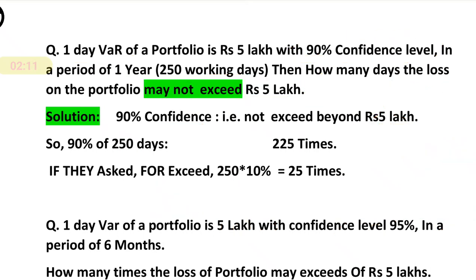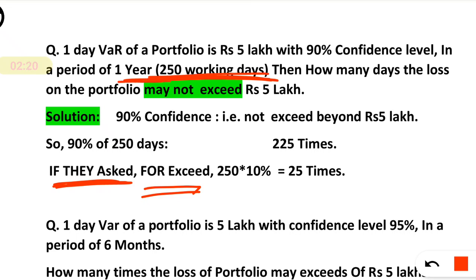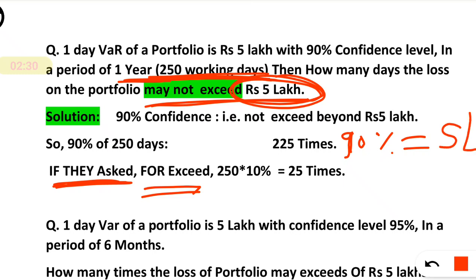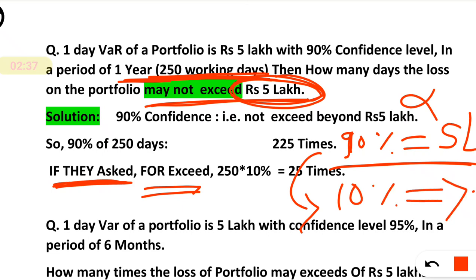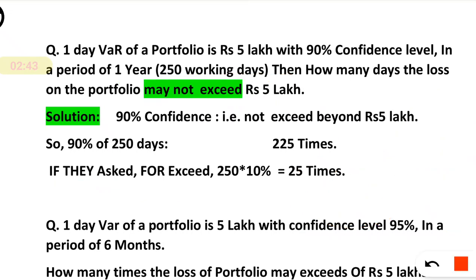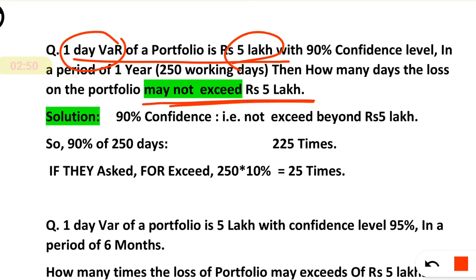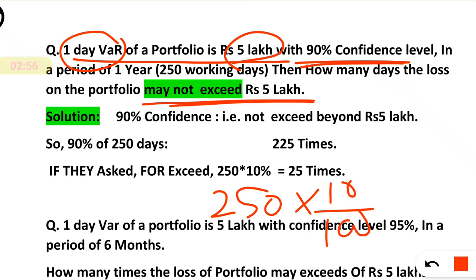Now remember, if they asked in the same 250 working days — that is in one year — how many times that value will cross 5 lakh? In such cases, 90% we are having confidence that value will not cross 5 lakh. That means it implies 10% we are not sure — that means it will cross 5 lakh rupees. Simply 10% we are not confident. So for exceeding, we will have 10%. For 250 days, simply calculate 10% of it. You will get 25 times.